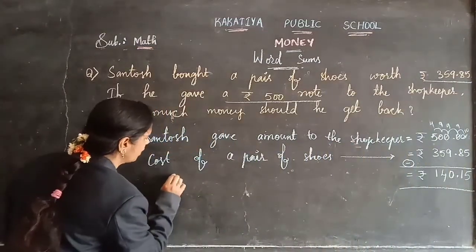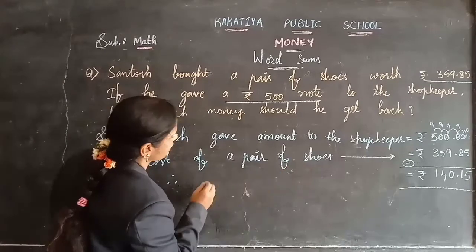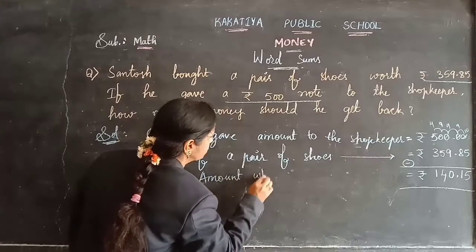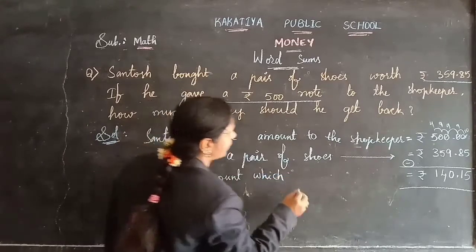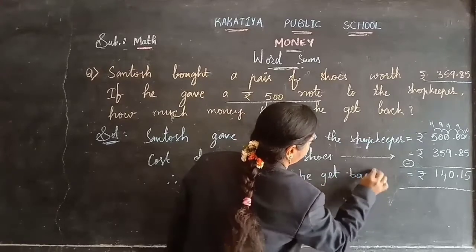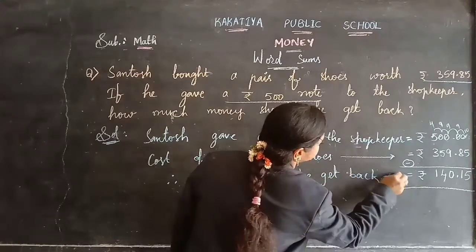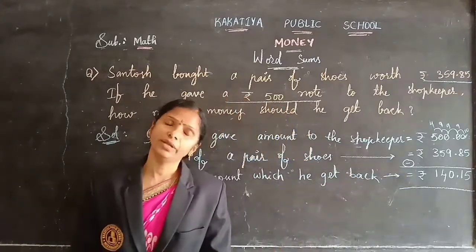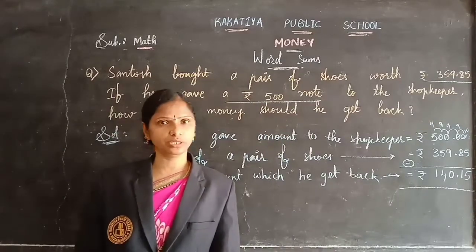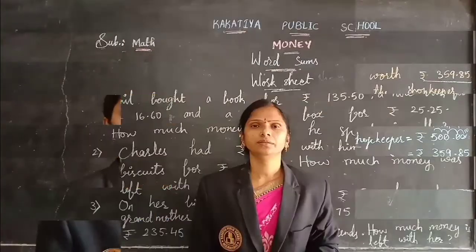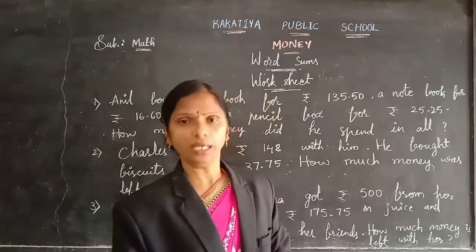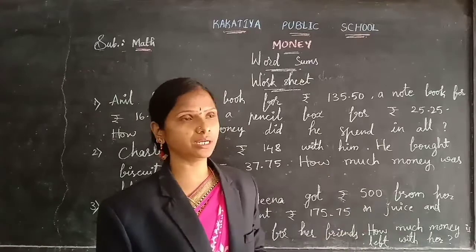That is the final step — therefore the amount which he gets back is 140 rupees 15 paise. Is it clear, children? Whenever you are finding the get-back amount, compulsory you do the subtraction. I hope you understood what I explained in this video. Come on, let's do the worksheet with that type of problems.